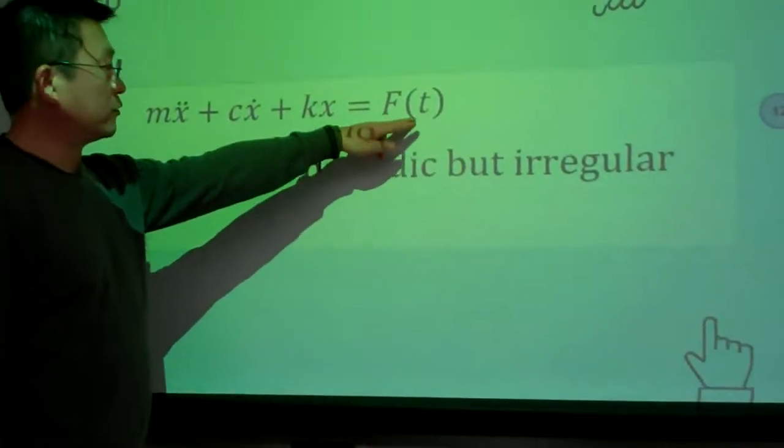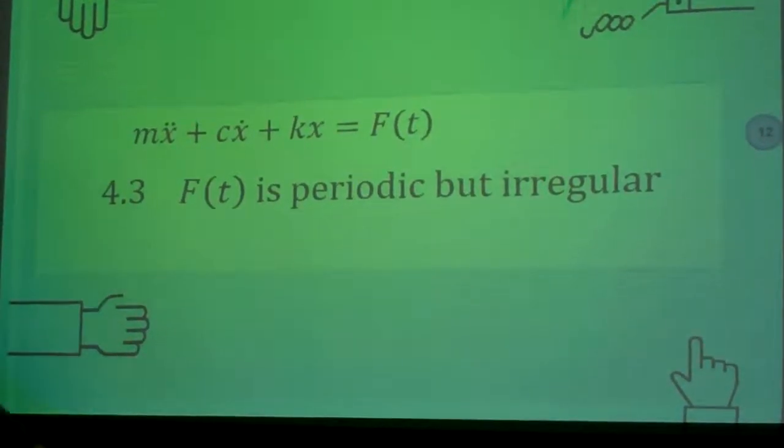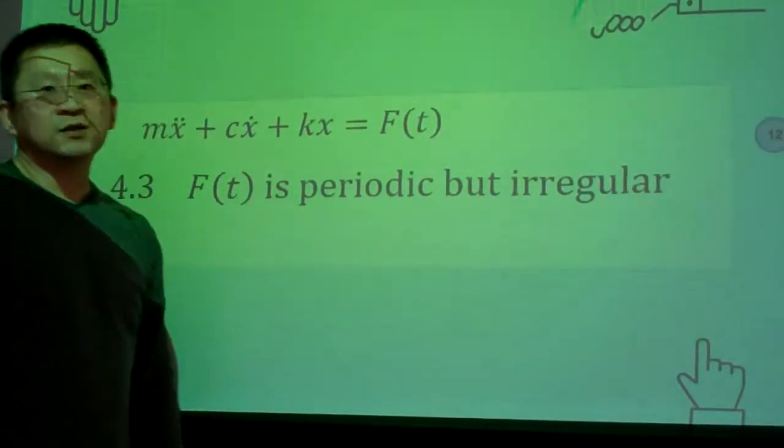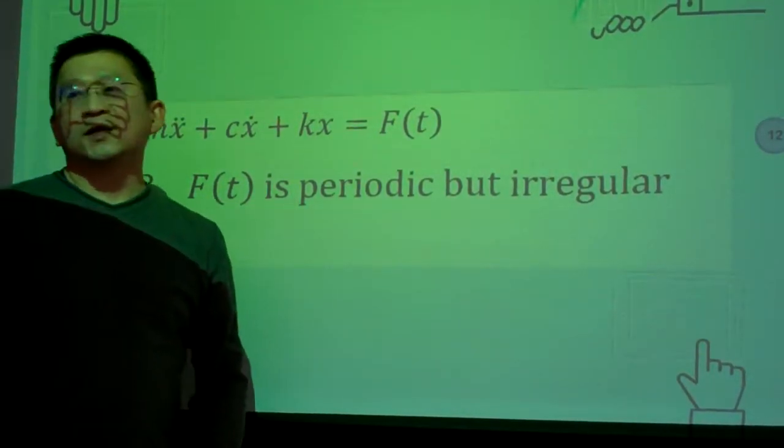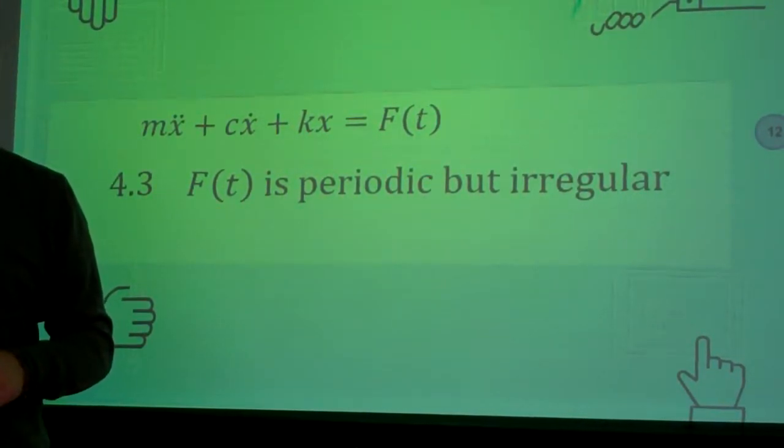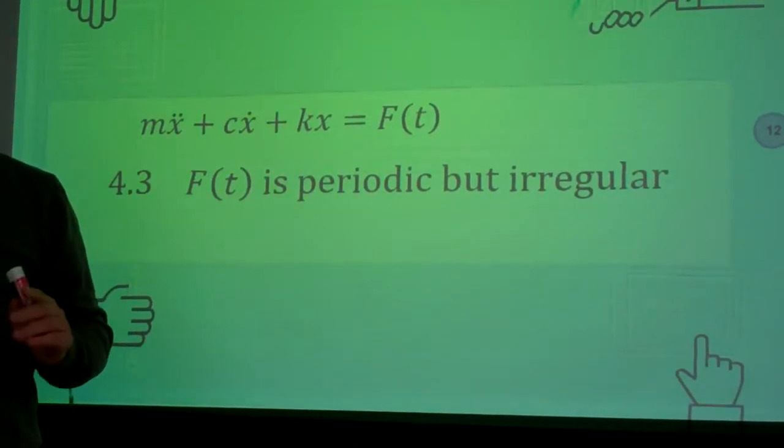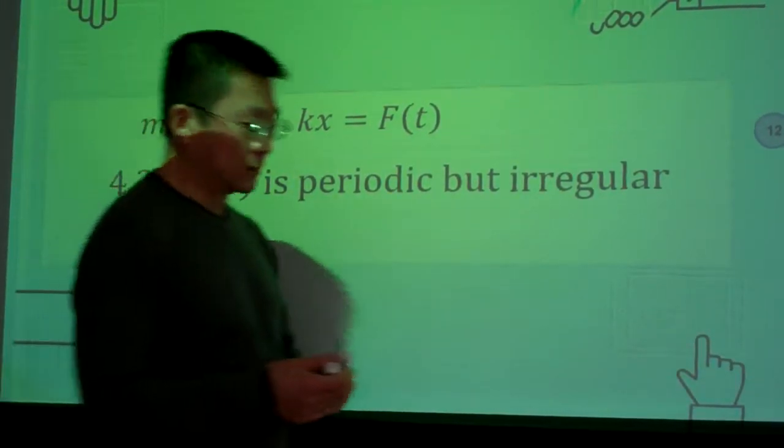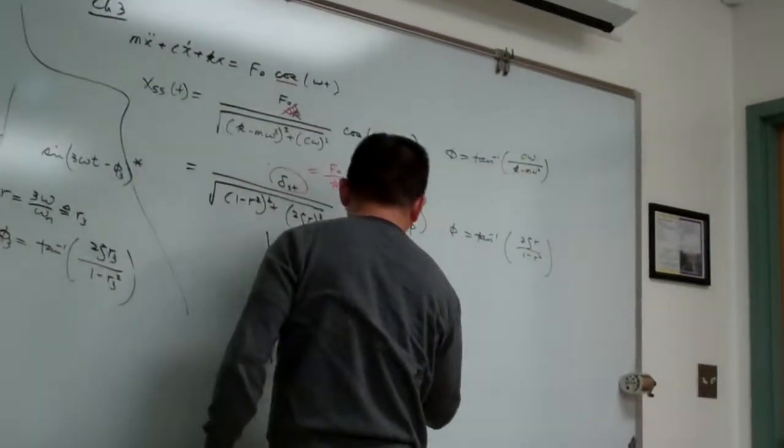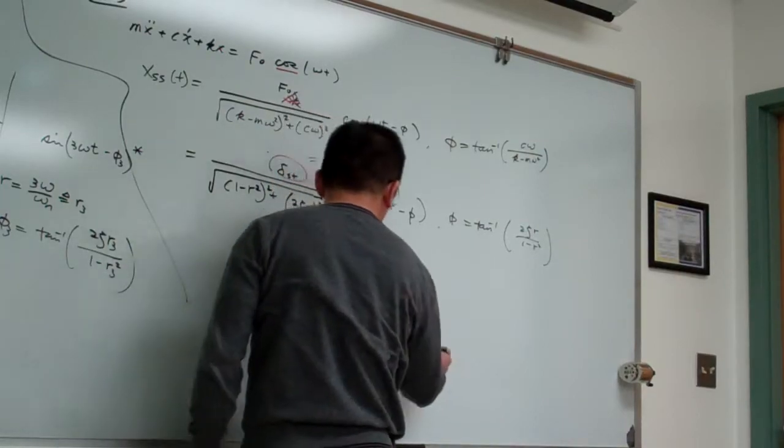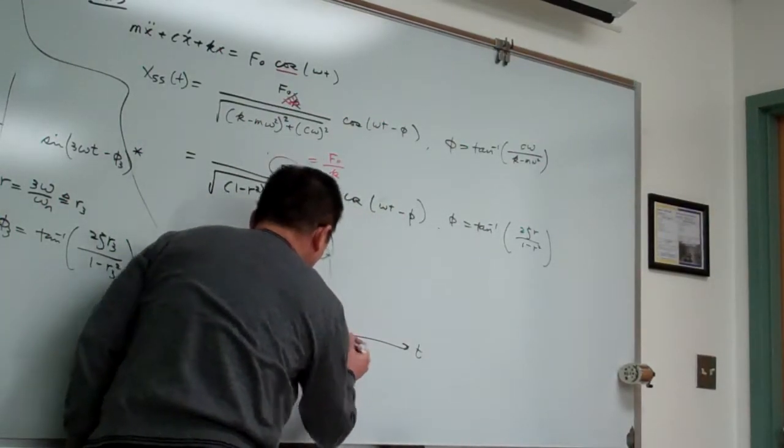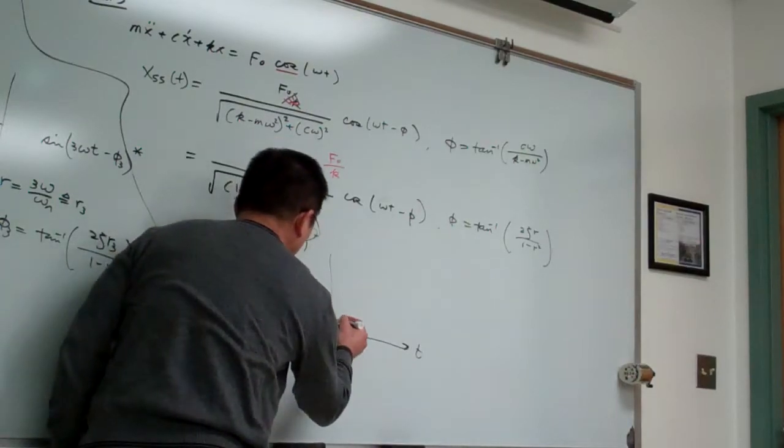We're discussing forces that are periodic and irregular. Irregular means it's not simple, not as simple as a square pulse, square form, or triangular form. Instead, it's irregular, something like this. So if this is a force and this is time, in one period there's a period here, maybe something like this.